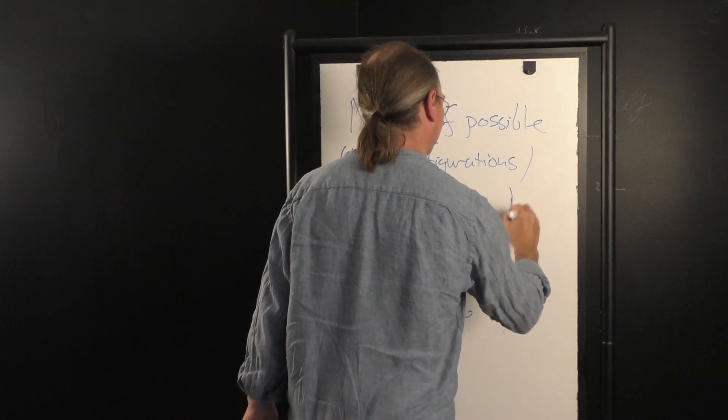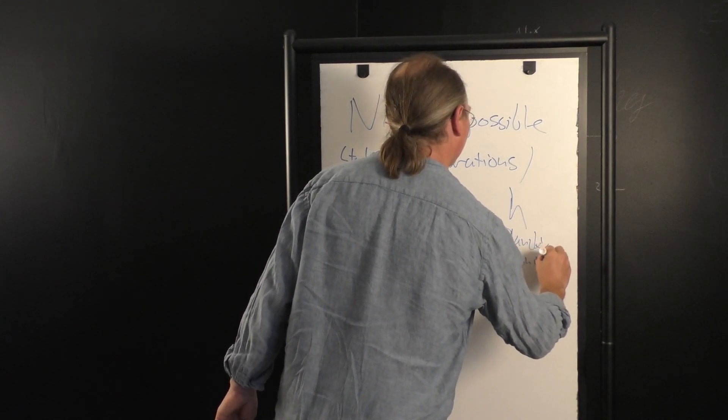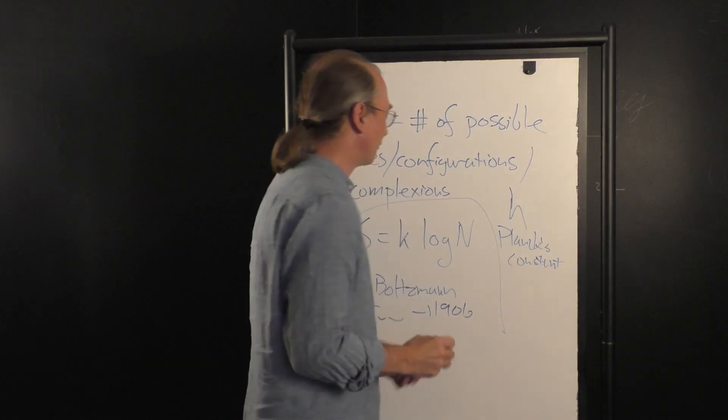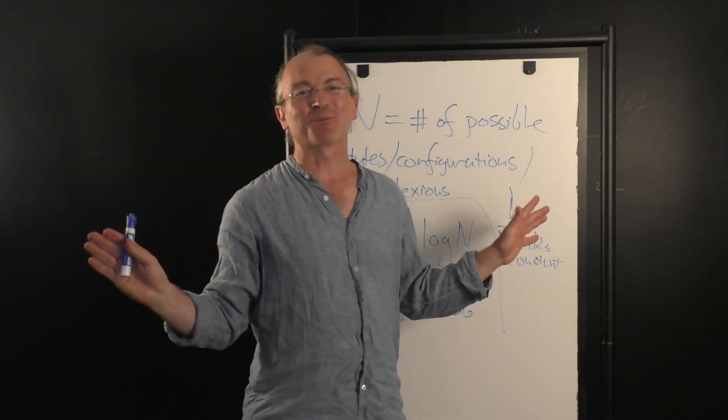But Planck also had another constant named after him, H, which we'll see again, because it governs the quantum mechanical behavior of things. So after a while, people just said, hey, let's just call it Boltzmann's constant.